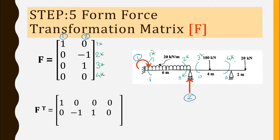The second system coordinate is a vertical reaction. The easiest method for a vertical reaction in the force transformation matrix is to place minus 1 on the left-hand side and plus 1 on the right-hand side of that reaction, with all other element coordinates as zero. So one-star is 0, two-star is minus 1, three-star is plus 1, four-star is 0. The F-transpose matrix is therefore: row 1 = [1, 0, 0, 0] and row 2 = [0, minus 1, plus 1, 0].